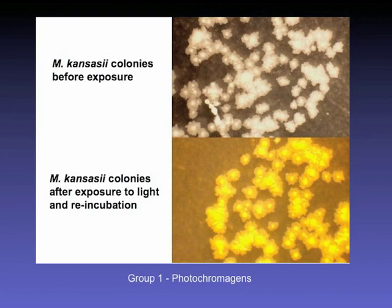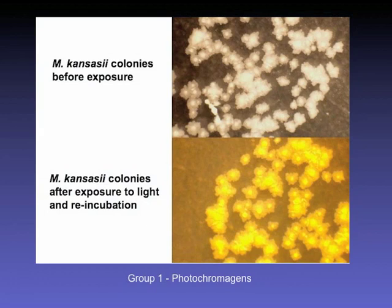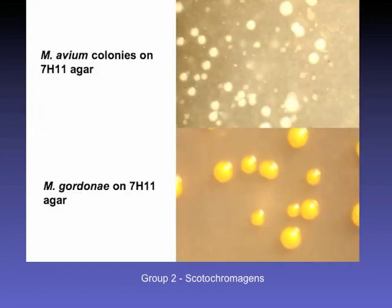M. kansasii is a photochromogen. On the culture slant, when not exposed to light, you see the typical round, irregularly shaped, cottage cheese-like morphology on the media. Then you expose it to light and reincubate it, and it makes the orange-yellow pigment. MAC is a nonchromogen and doesn't make pigment. M. gordoniae is a scotochromogen — it makes yellow-orange pigment even in the dark.